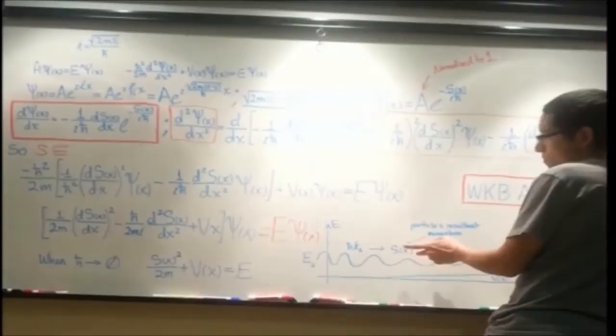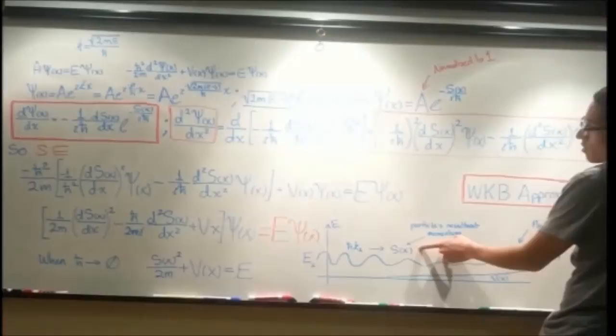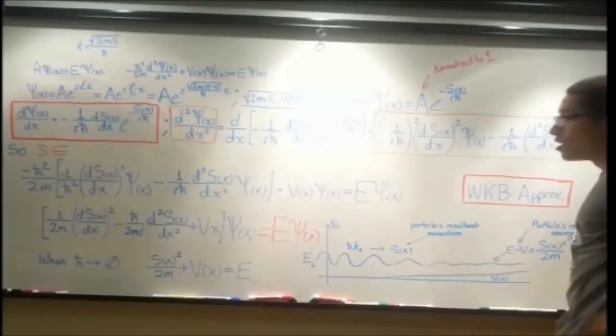And that momentum, well, it is square root of 2m(E minus V), but we substitute all of that times x, and we substitute s(x) for that. So that's going to be the quantum action.